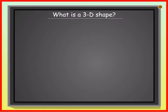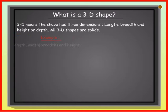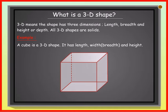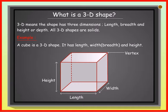What is a 3D shape? 3D means the shape has three dimensions: length, breadth, and height or depth. All 3D shapes are solids.